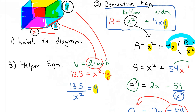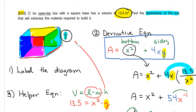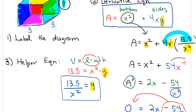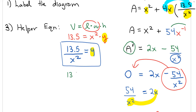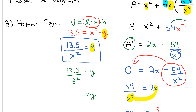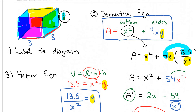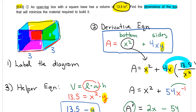So the x values — the sides or the bottom lengths — are going to be 3 and 3. To find the y value, use the helper equation: y equals 13.5 over 3 squared, which equals 1.5. So the values of x are 3 and 3, and y is 1.5 inches. These are the dimensions that will minimize the material required to build this object.